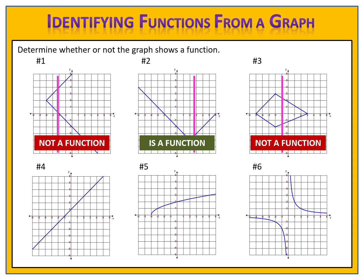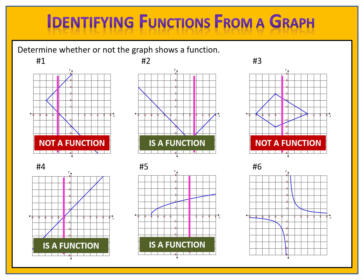On number four, we go across the graph — are there any inputs that produce more than one output? No. No matter where we put our vertical line, we only hit the graph once. Each input produces exactly one output, so graph four is a function. How about graph five? No matter where we place the vertical line, we only pass through the blue graph once — each input produces exactly one output, so graph five is a function.